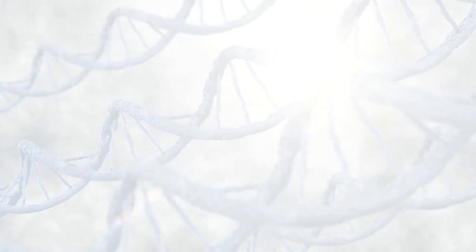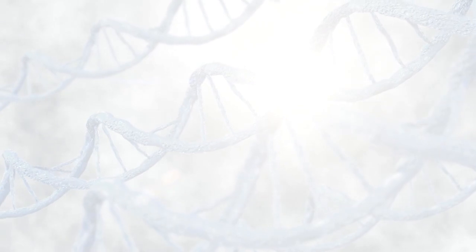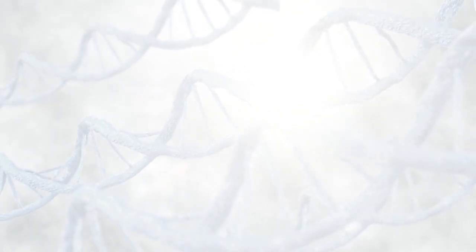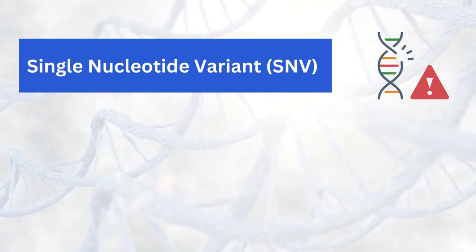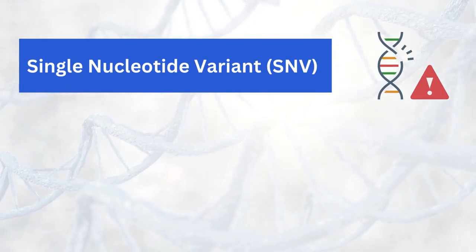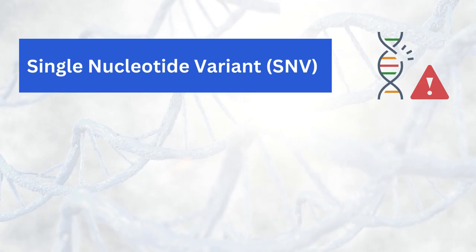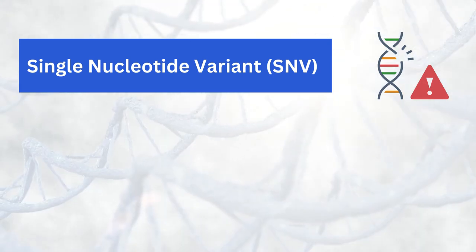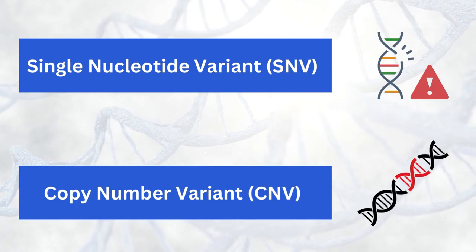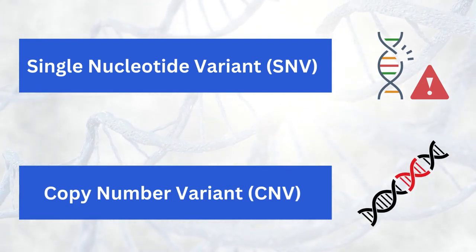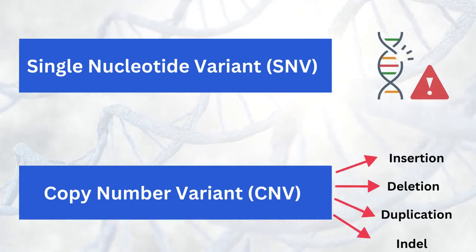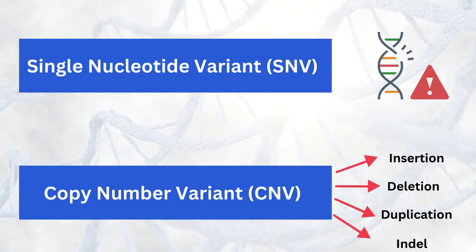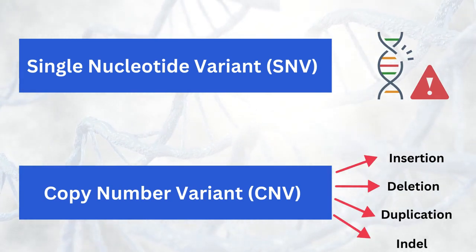The described variants can occur on various levels across the genome. When these variations occur on a small scale — that is, a few or a single nucleotide — they are referred to as an SNV, or a single nucleotide variant. However, when variants occur on a much larger scale affecting thousands or millions of base pairs at once, they are called copy number variants, or CNVs. Similarly to SNVs, CNVs can take on the form of an insertion, deletion, duplication, or indel. We will be focusing on SNVs.